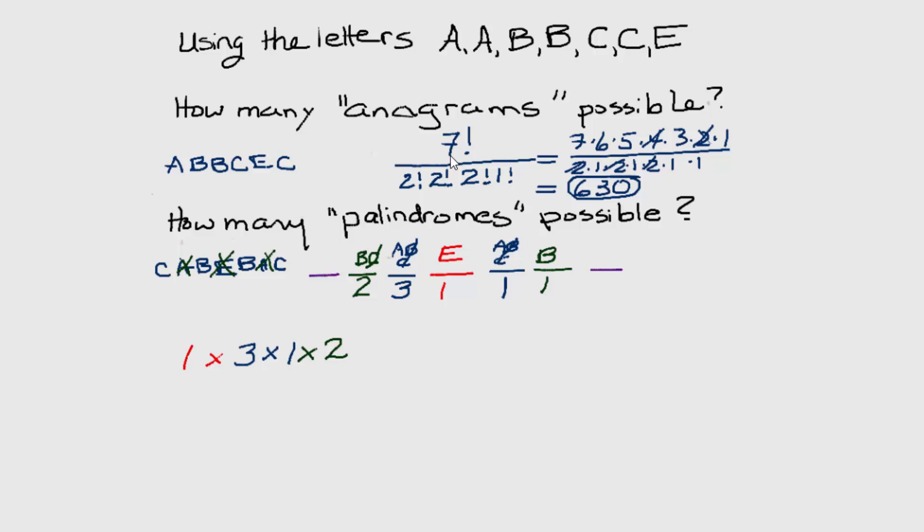So for our parts of our task, we will next choose the letter on the left in green. Two ways to do that. We're going to multiply that by the number of ways to choose the letter on the right in green. Only one way to do that.